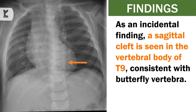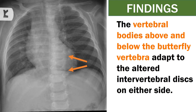As an incidental finding, a sagittal cleft is seen in the vertebral body of T9, consistent with butterfly vertebra. The vertebral bodies above and below the butterfly vertebra adapt to the altered intervertebral discs on either side.